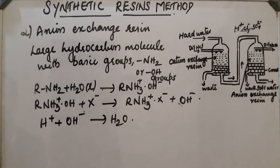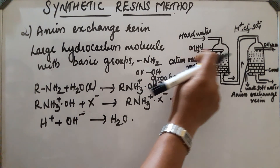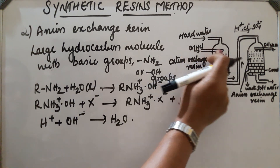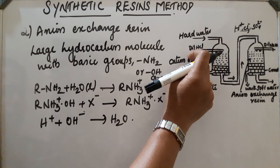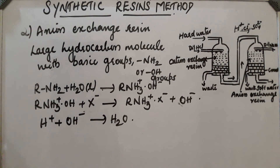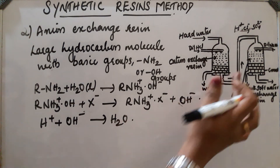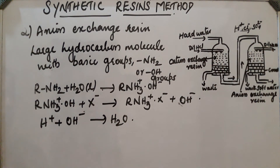The cation exchange resin can be regenerated by adding dilute HCl. After exhaustion, adding dilute HCl regenerates the cation exchange resin. Similarly, by adding dilute NaOH, the anion exchange resin can be regenerated.